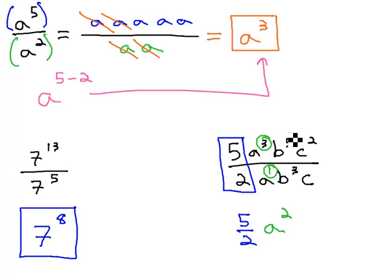Similarly, on the b's, b to the 5th, divide out b cubed, and we're left with b squared, because 5 minus 3 is 2.